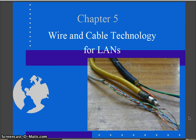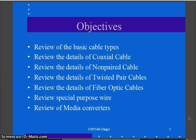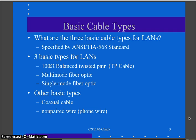Hello, this podcast is for CNT 140. We're going to be looking at Chapter 5 on wire and cable technologies for LANs. This is going to be a series of podcasts that covers all the media, but we'll start with coax and work our way through. The main goals of this chapter are to introduce you to the different types of media you encounter in networking and give you a little exposure to each one with some details on how they function.